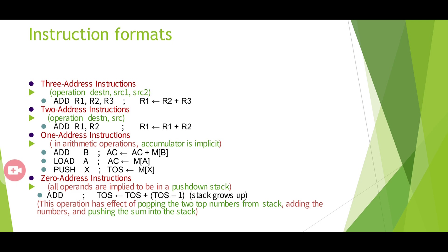The second is the two-address instruction, where the opcode is followed by two operands: destination and source. Here R1 = R1 + R2, so source 1 and the destination are the same register. The third is one-address instruction, where only one address is specified within the instruction, examples being ADD B, LOAD A, PUSH, etc. The fourth is zero-address instruction, where all operands are implied on a push-down stack and it is used for stack operations.